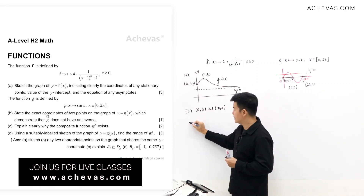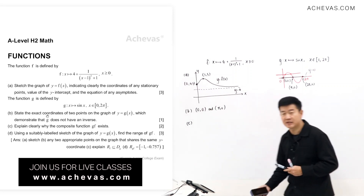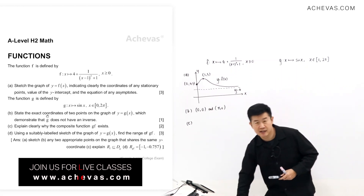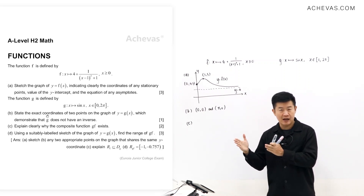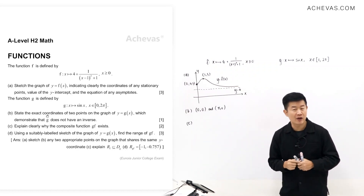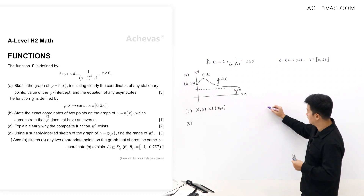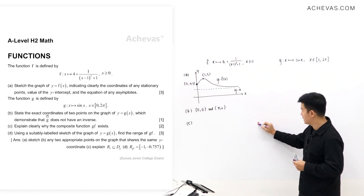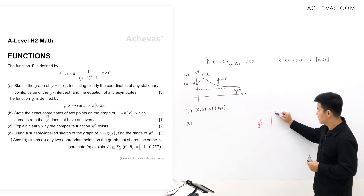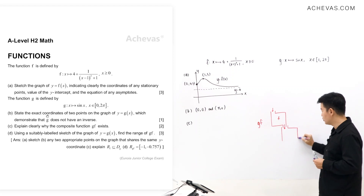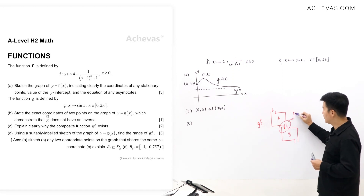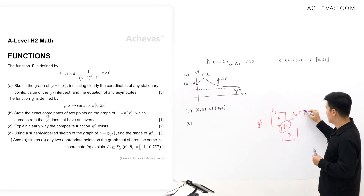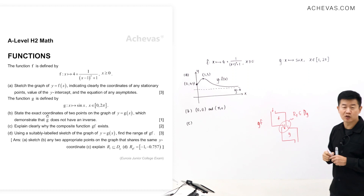For part C, we want to explain why the composite function gf exists. For gf to exist, we need a clear idea of how sets of numbers are passed from one function to another. Numbers are first passed into f, then the numbers coming out of f are passed into g. For the composite function to exist, all numbers coming out of f must be received by g — so the range of f must be a subset of the domain of g.